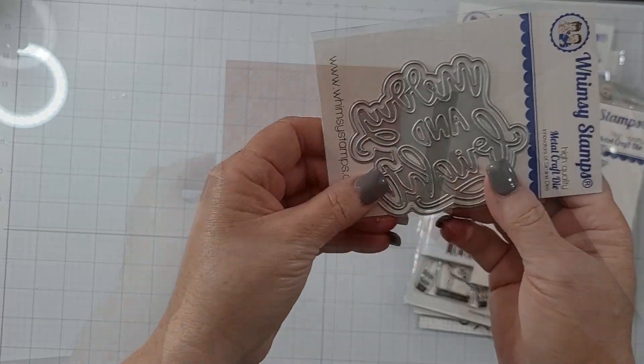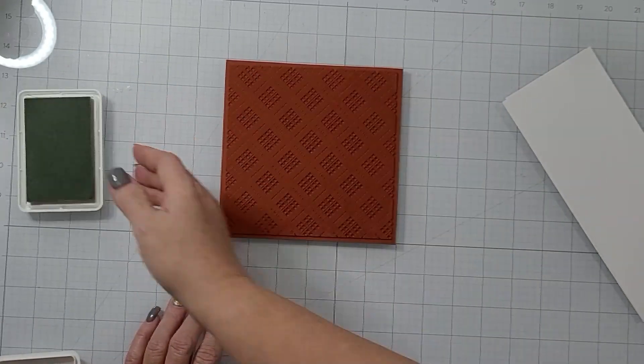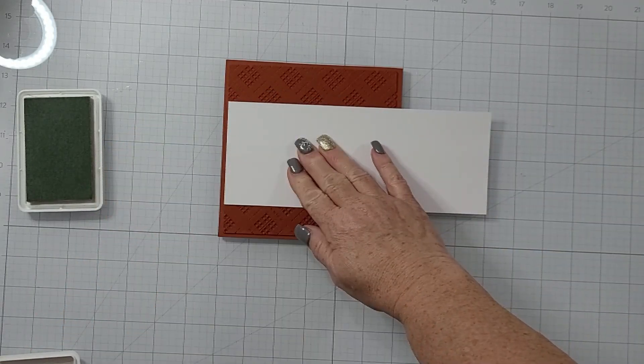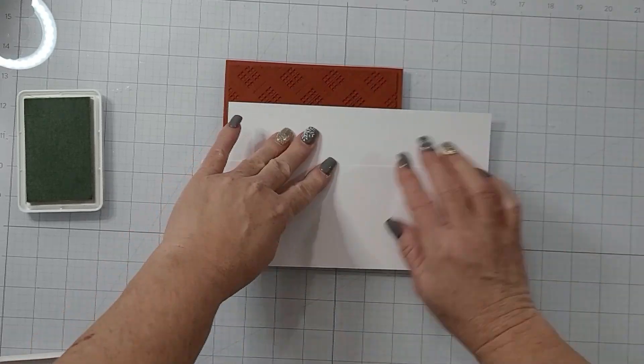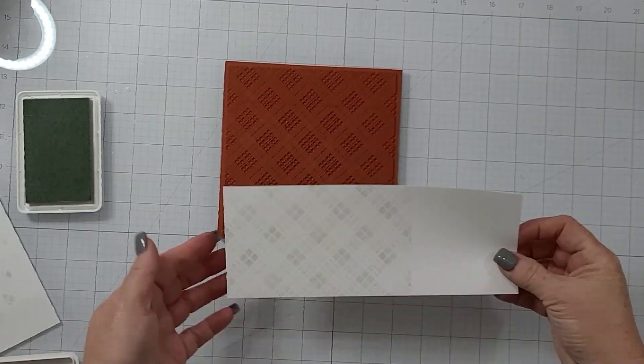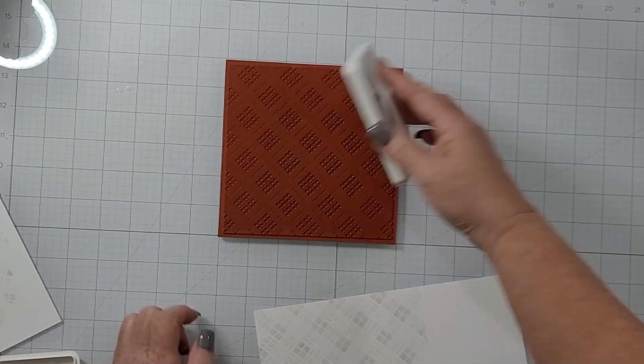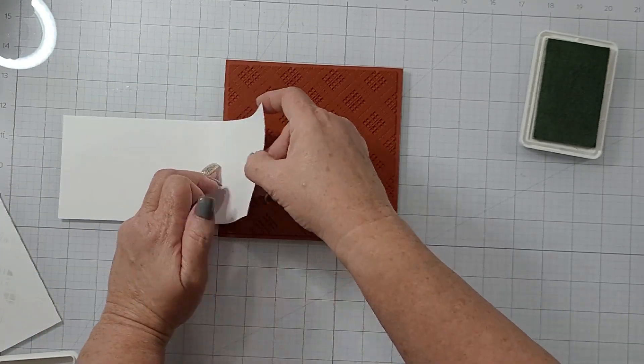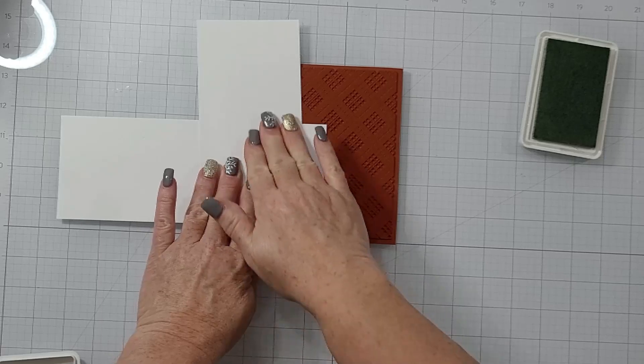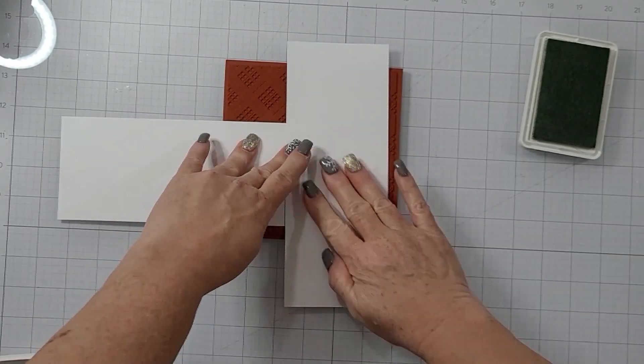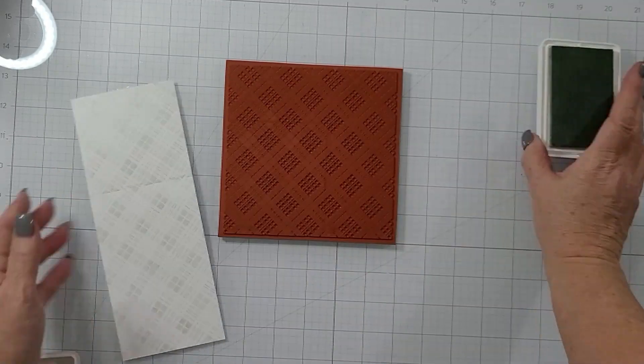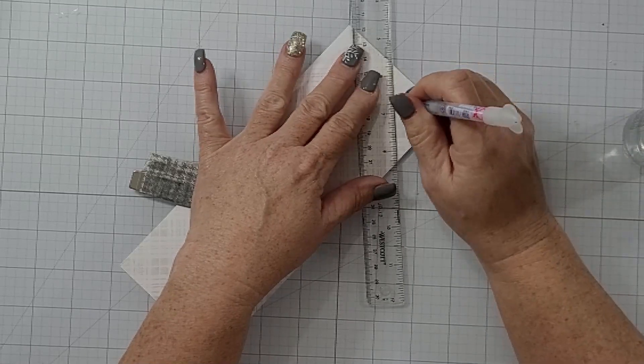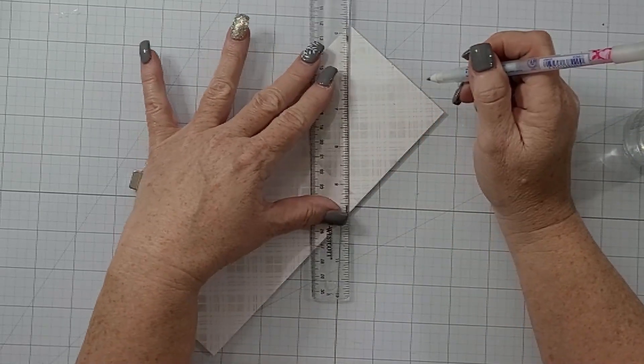I'm starting by stamping out my background. This is the tartan plaid red rubber background stamp from Whimsy Stamps, one of my favorites. I love a good plaid, especially at Christmas. This is the way I always use my red rubber background stamps - I put them down on my surface and take my paper over to the stamp itself. I'm trying to line up that plaid, not being fussy but just to the best of my ability.